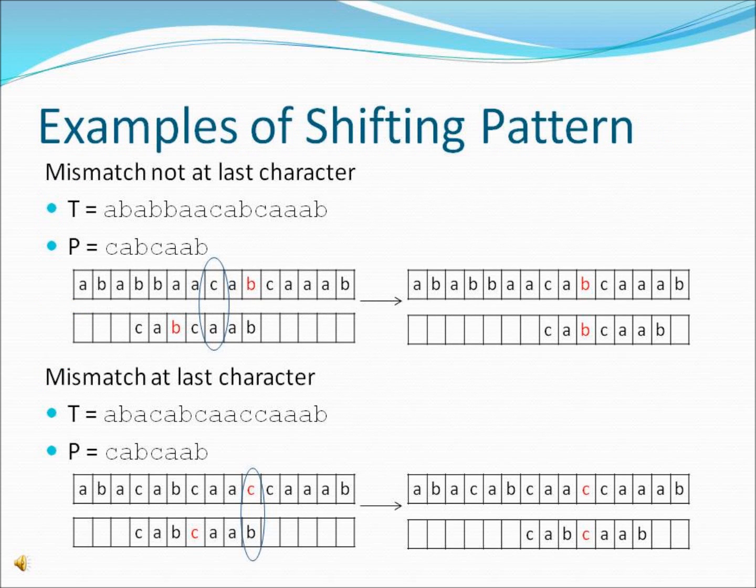Now we're going to go through some examples of shifting the pattern. There are two different cases for shifting the pattern. The first is when a mismatch occurs somewhere other than with the last character of the pattern. You can see an example of this circled in the top example.